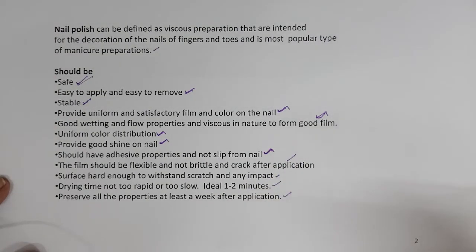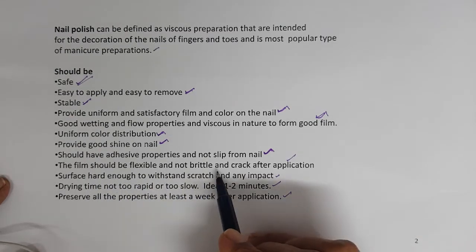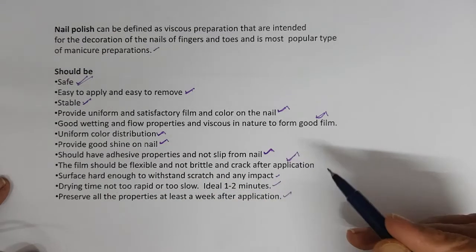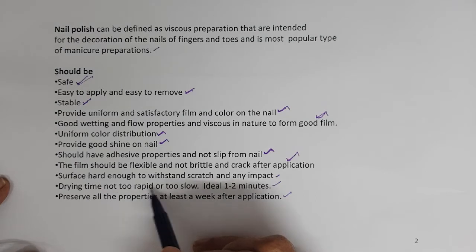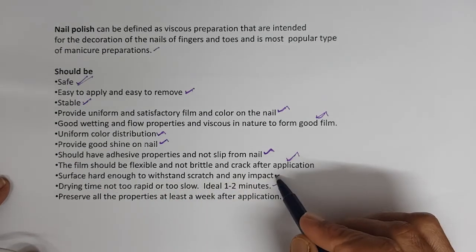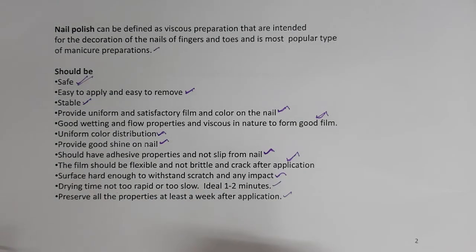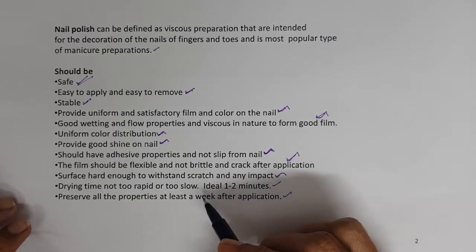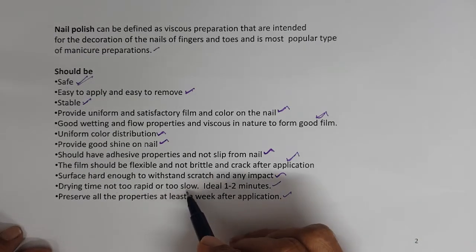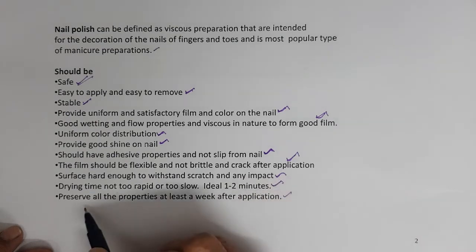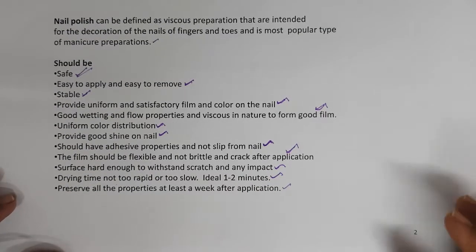The color should adhere to the nail. The film should be flexible and not brittle or crack after application. The surface should be hard enough to withstand scratches and any impact. Drying time should not be too rapid or too slow — if too rapid you can't spread it well; if too slow you might smudge it into clothes or other things. The ideal drying time is 1 to 2 minutes.